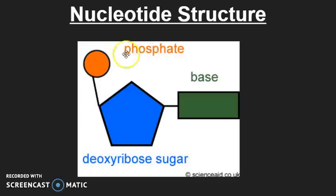The first part is the phosphate, and the phosphate is represented on here as our orange circle. And if you notice, the phosphate is connected to the next part, the deoxyribose sugar.